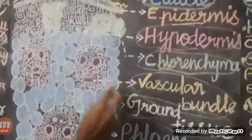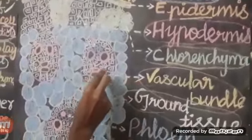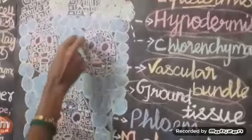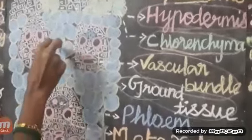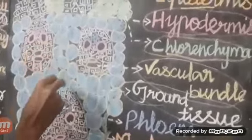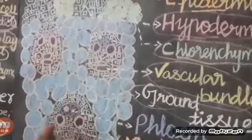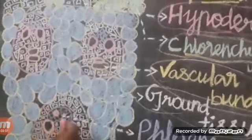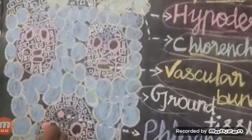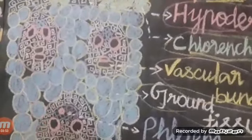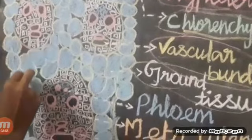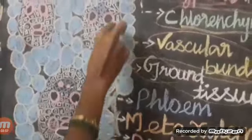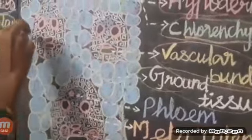Vascular bundles are conjoint, which means compound. They are collateral, which means arranged side by side. They are also endarch, which means the protoxylem is innermost. The vascular bundles are closed — see the structure.